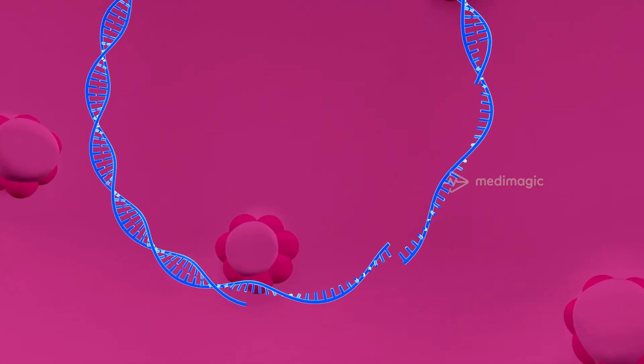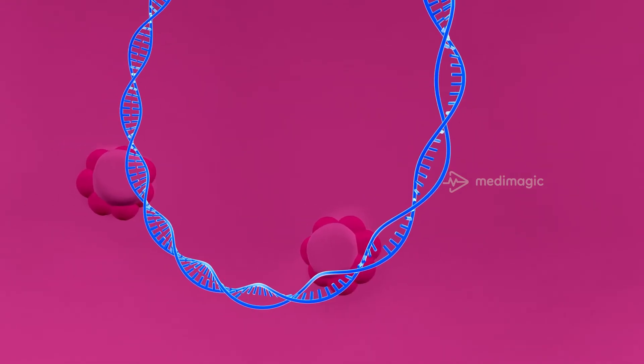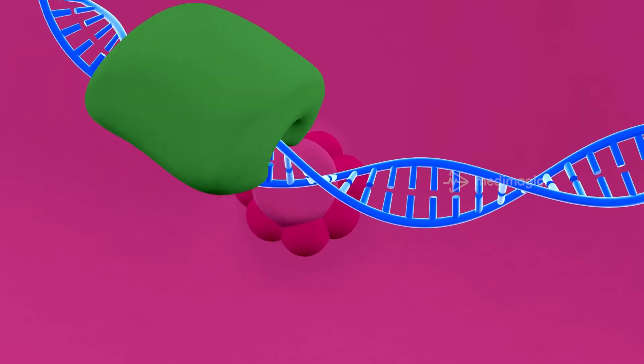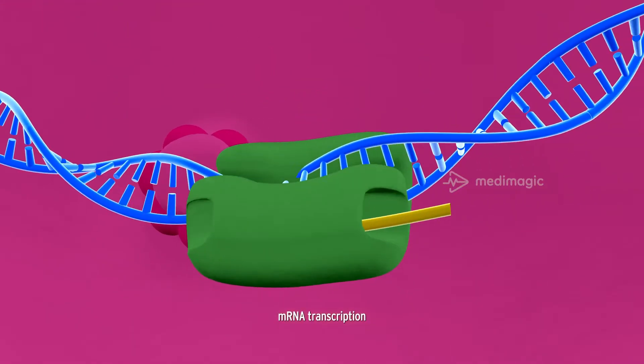Once inside the nucleus, it first uses the host polymerases to complete its partial DNA into a complete circular DNA. Now, it begins transcription of mRNA.